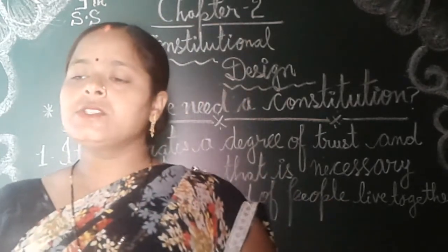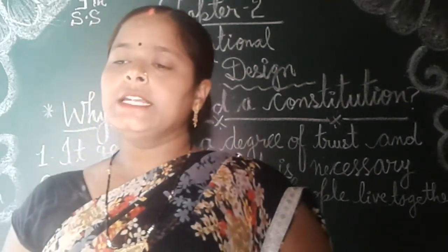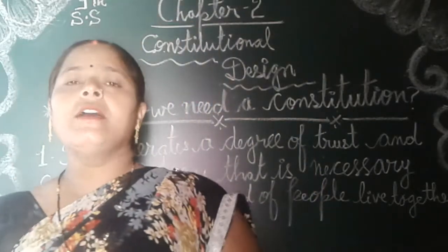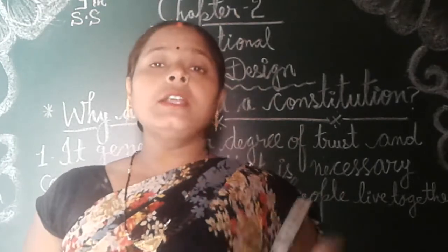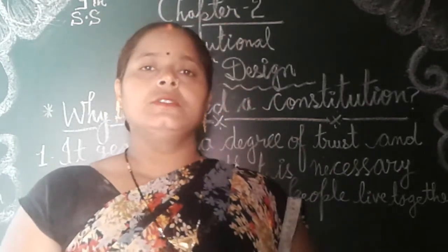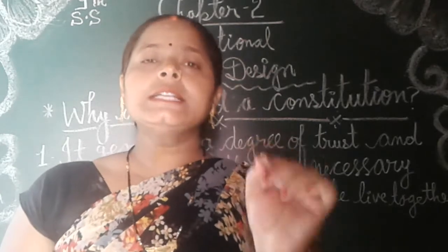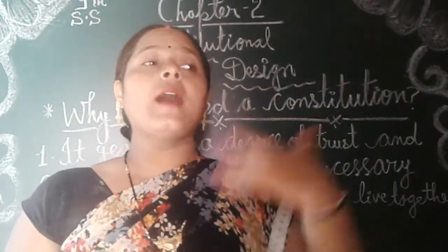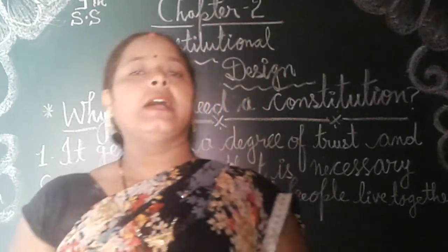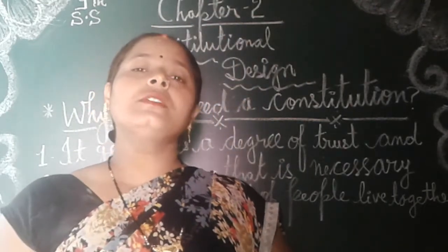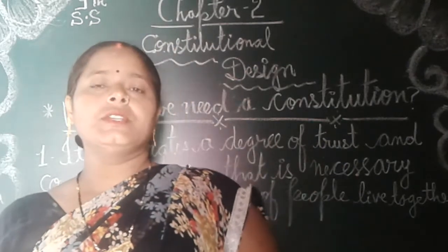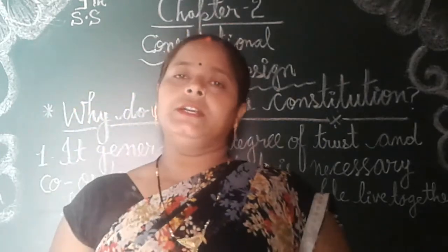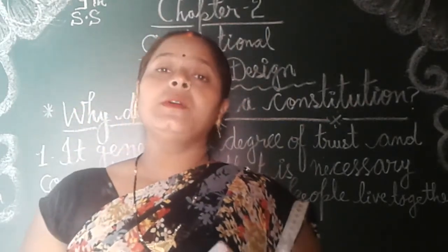The third point is that the constitution lays down limits on the power of government and tells us what the rights of the citizens are. Our constitution contains fundamental rights — whatever we are authorized to do is written there, and we must act accordingly. If we go against it, we will be punished by the authority. In a democratic country, all rules and regulations given under the constitution must be followed word for word.